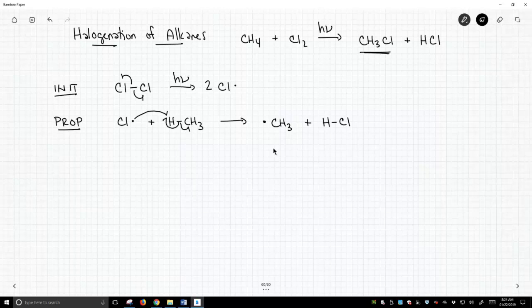Notice, this is a propagation step. There should be no net change in the concentration of radicals, and there's not. We destroyed a radical, Cl dot, but we made a new one, CH3 dot.